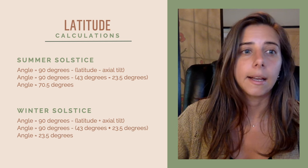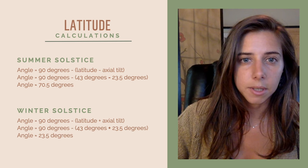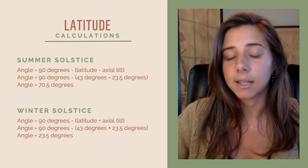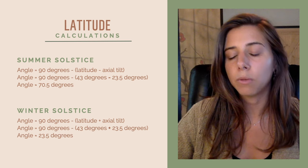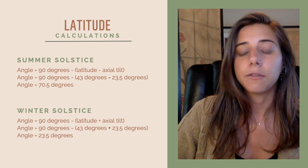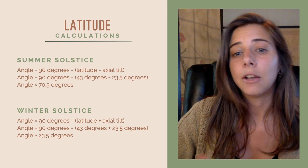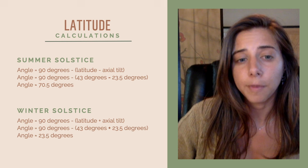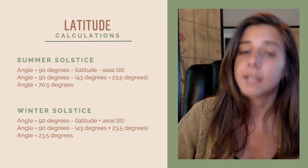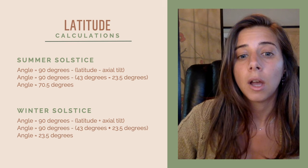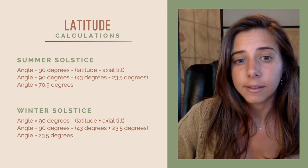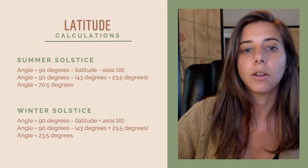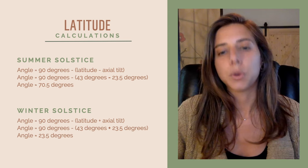Here's how you do it — calculating these angles is super simple. Once you know your latitude, the control is the earth's tilt, which is 23.5 degrees. For the summer solstice, take your latitude minus 23.5, then subtract that from 90. For the winter solstice, add together the latitude with 23.5 and then subtract that from 90. That'll give you your winter and summer solstice angles.